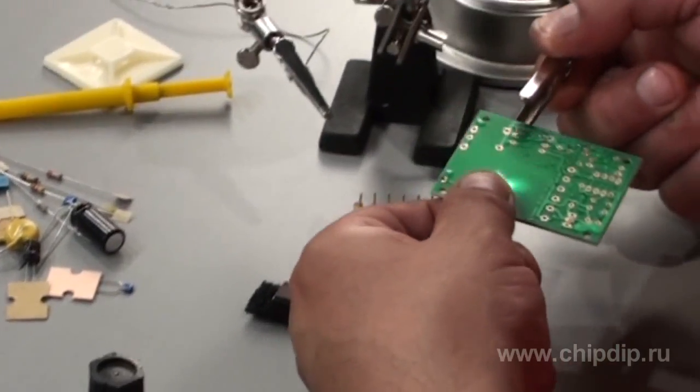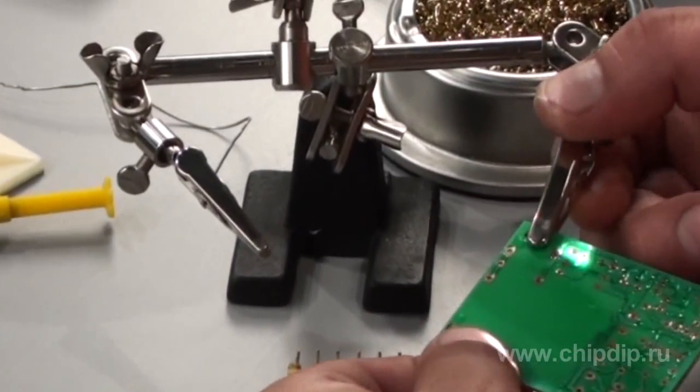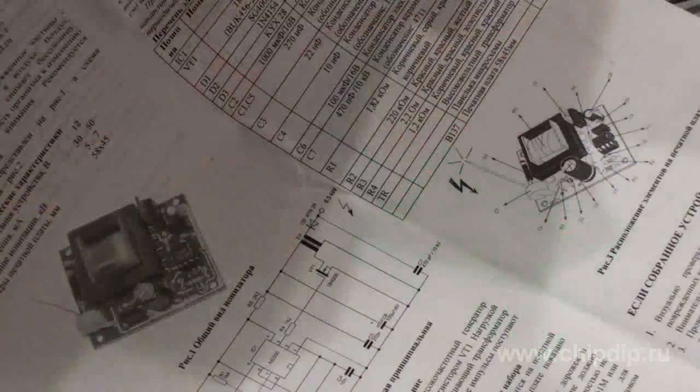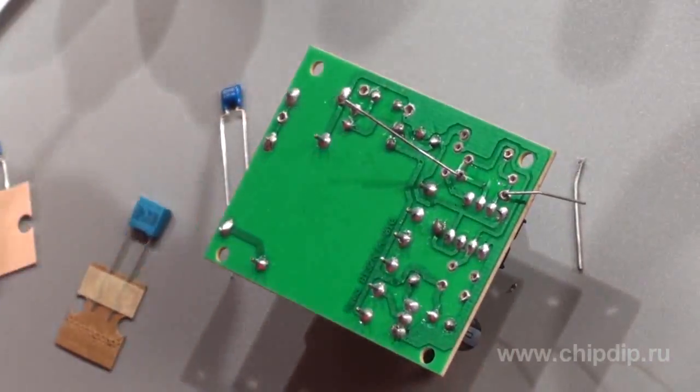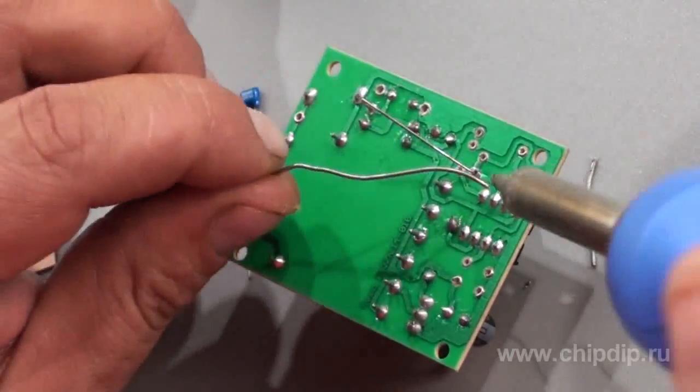One can clearly see where to place the components on the PCB, so the assembly process isn't really difficult. The complete set includes everything you need and even a detailed diagram with description that will help you assemble the air ionizer easily.